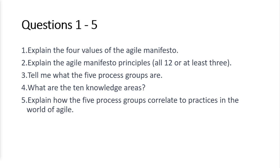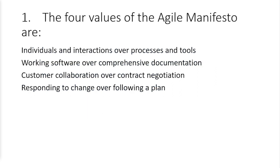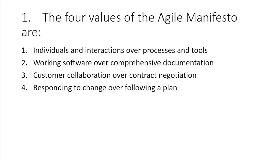We'll start with questions one to five. The four values of the Agile Manifesto — you can find these at agilemanifesto.org. Number one: individuals and interactions over processes and tools. Number two: working software over comprehensive documentation. Number three: customer collaboration over contract negotiation. And number four: responding to change over following a plan.